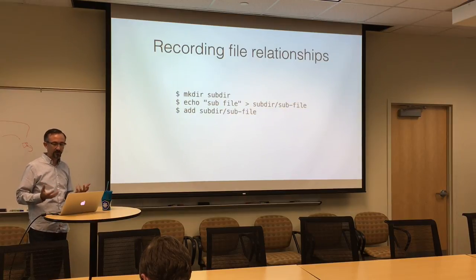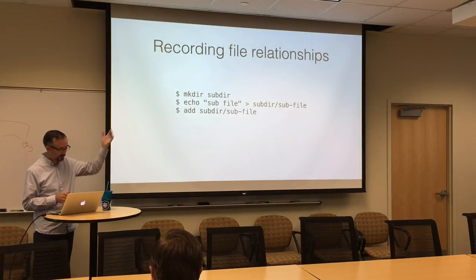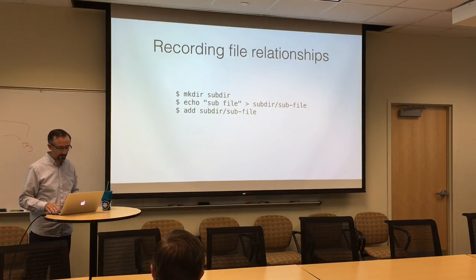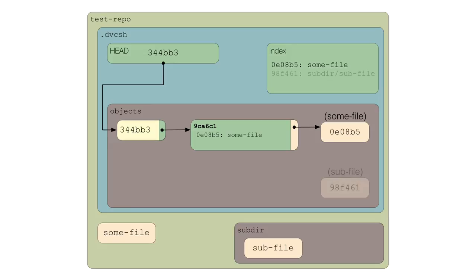You might be saying: this is great, but only if all the files live in one directory. How does this handle hierarchies? Most projects have nested hierarchies, directories that are deep. Go ahead and make a subdirectory in your repo, echo subfile into subdir/subfile, and run the add command. Add will copy the object by its hash and update the index. We've created a subdirectory and subfile. When we run add, we create a new blob and the index holds the full path to the file. This way we have a map of hashes to paths, not just file names.